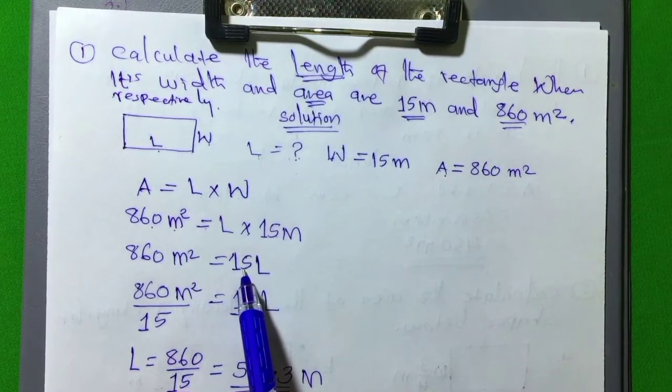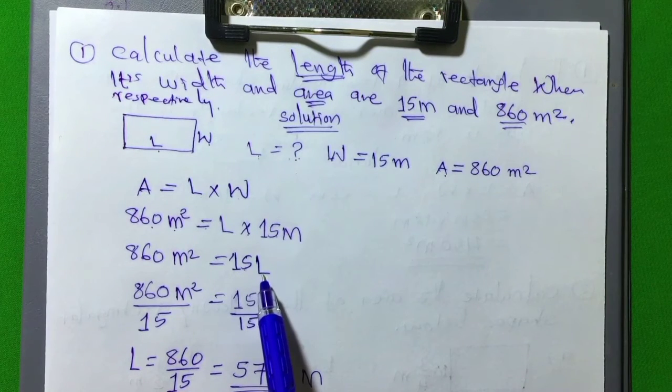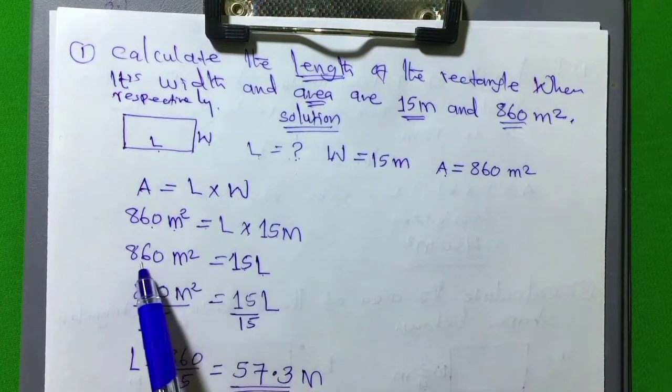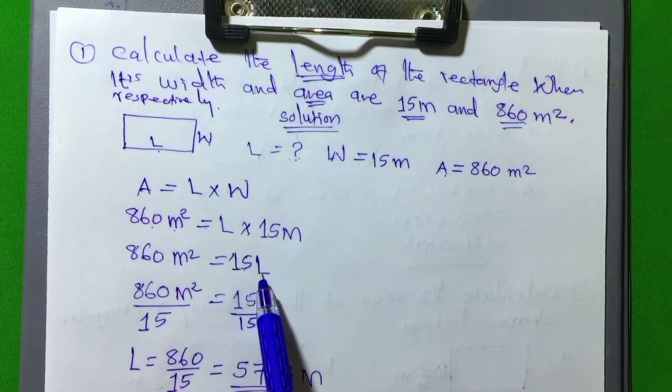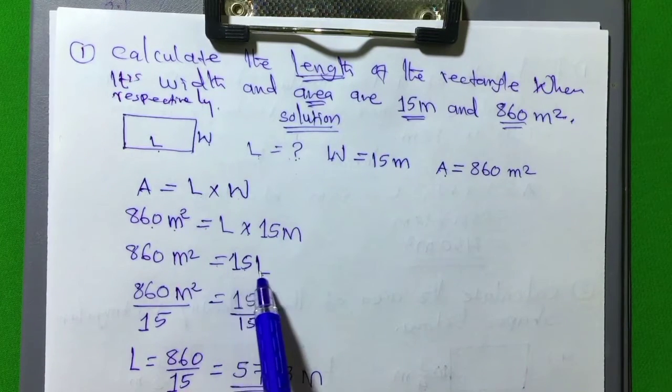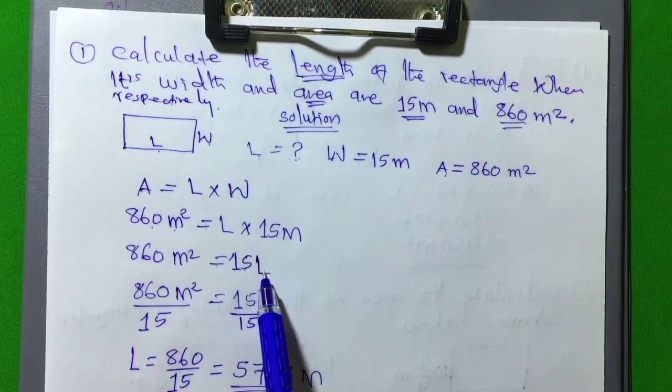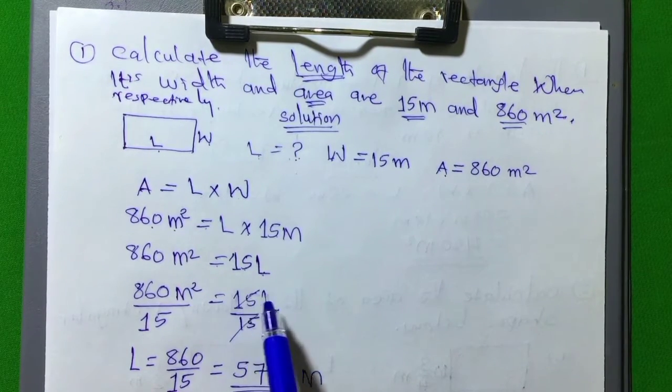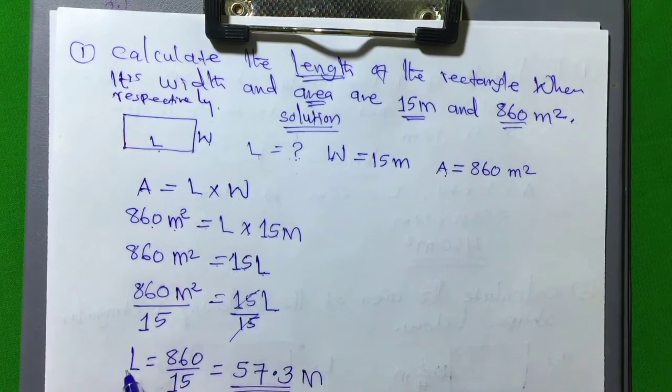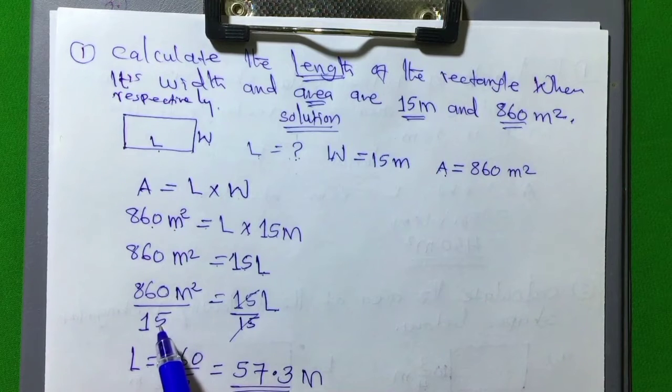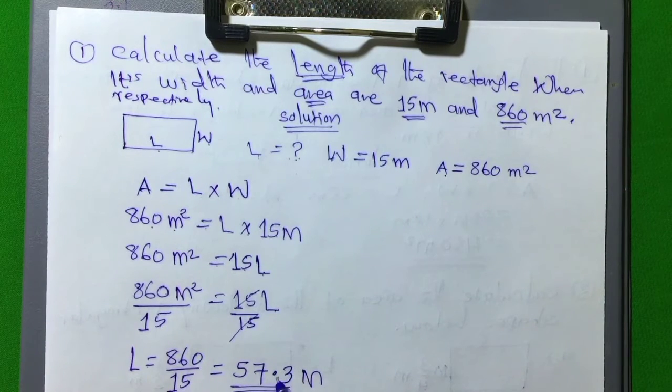Then here now we have the value of L which is missing divided by 15. We have 860 meter square is equal to 15L. To get the value of L, 15 goes to 15, we only remain with L, and L is equal to 860 divided by 15, you will get automatically 57.3 meters.